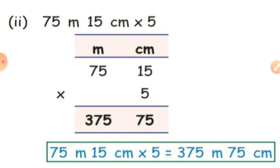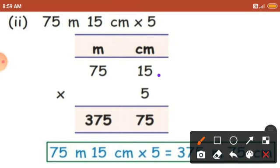Let's see the second sum: 75 meter 15 centimeter multiplied by 5. First write the units — the units are meter and centimeter. After that write the numbers accordingly. In the meters place 75 is there, so write 75 in the meters place. Next, in the centimeters place 15 is there, so write 15 in the centimeters place. Next, multiply this number with 5.